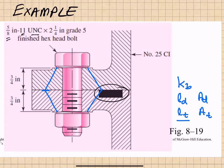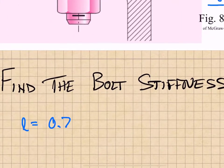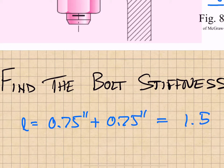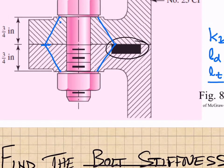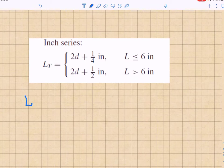The grip length is the thickness of all components loaded in compression. Here, that is 0.75 inches for the top plate plus 0.75 inches for the bottom plate, for a total grip length of 1.5 inches. The bolt has a nominal diameter of 5/8 inch (0.625 in), 11 threads per inch (coarse thread), and a total bolt length L of 2.25 inches.